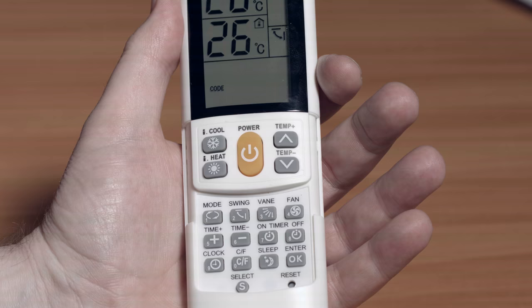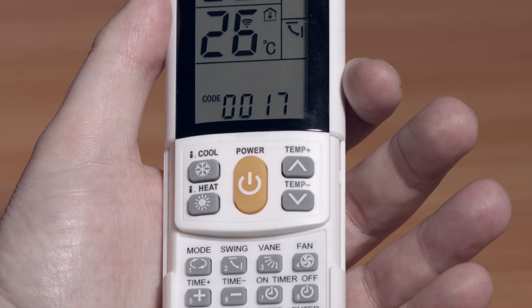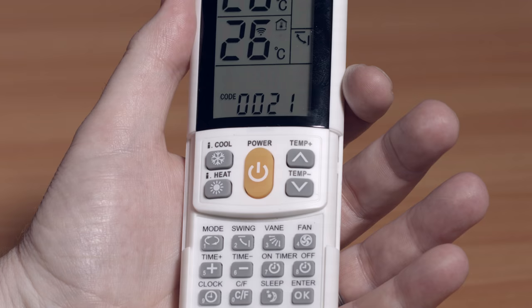Now I've got to remember to keep the unit pointed at my air conditioner at all times through this. It shouldn't take more than eight or nine minutes. If you're lucky, the code might be in the shorter end of the sequence.